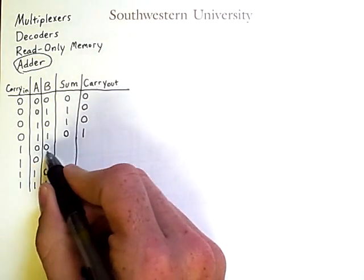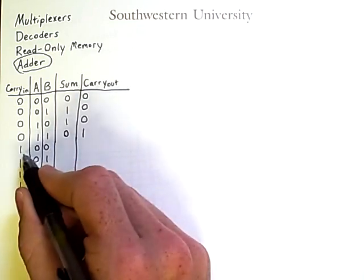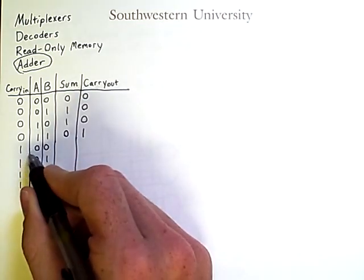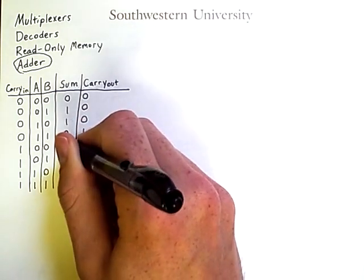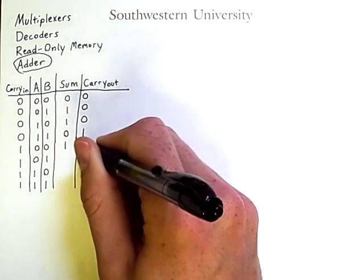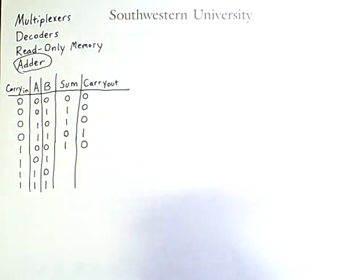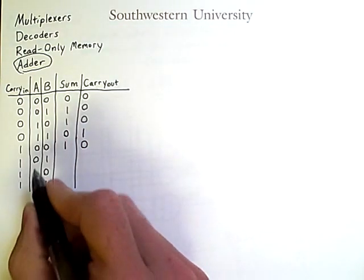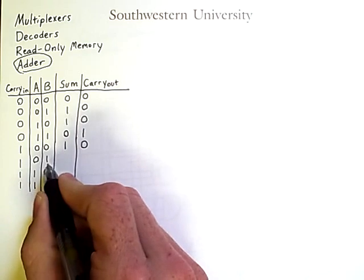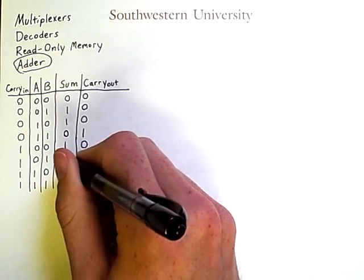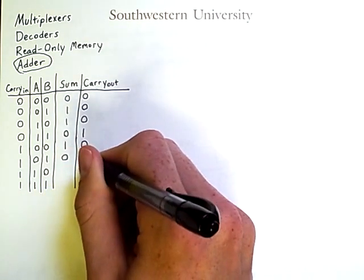But let's consider what happens when we do have a carry in bit of one. So if we're adding zero and zero, but we have a carry in bit of one, then we're also adding that bit to the sum. So the sum is one, and the carry out is zero. For the next row, one plus zero plus one is two. That means the sum is zero, but there's a carry of one.